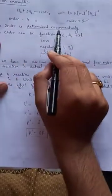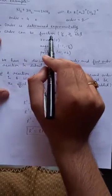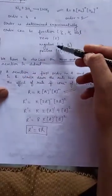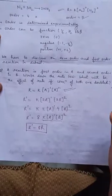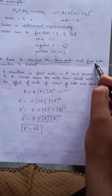So order is determined experimentally. It can be fraction, it can be 0, negative and positive. Among all the orders, we have to mainly focus on 0 order and first order.